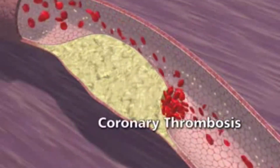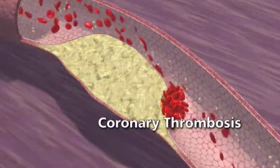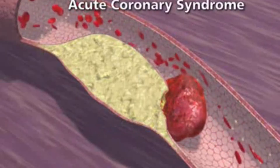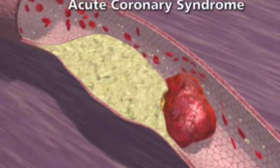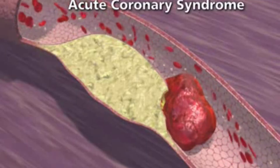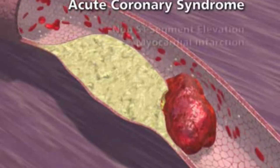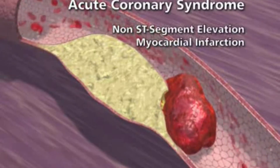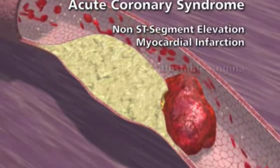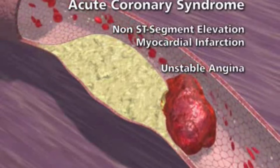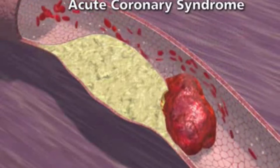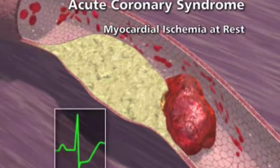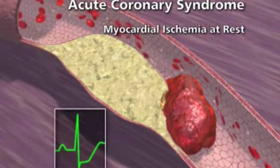When a thrombotic occlusion is subtotal, an acute coronary syndrome develops, and there are two types. The first type is known as a non-ST segment elevation myocardial infarction, and the second type is known as unstable angina. With these syndromes, the patient experiences chest pain at rest and the electrocardiogram shows ST segment depression.